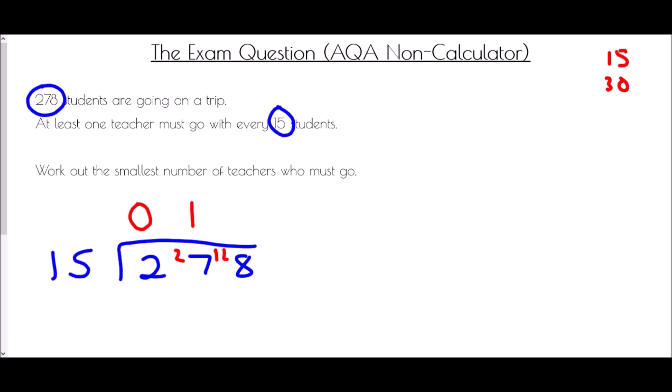So 15, 30, 45, 60, 75, 90, if I add another 15, it's 105, 120, 135. So 128, that takes me to 1, 2, 3, 4, 5, 6, 7, and 8.